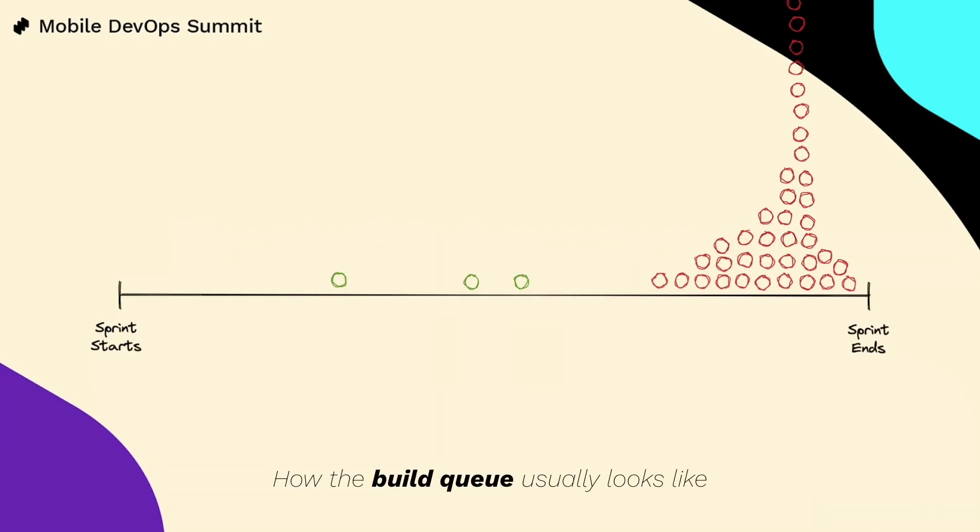To make it worse, builds are not evenly distributed during the sprint. I have seen this bottleneck at the end of the sprint so many times. And of course, this is expected — every team is polishing what they will present at the demo.